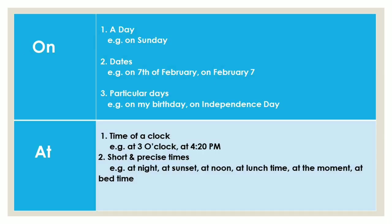The third preposition of time is 'at.' First, it is used for the time on a clock — for example, 'at 3 o'clock,' 'at 4:20 pm.' At 3 o'clock, we have a meeting; at 4:20 pm, the meeting will be over. Second, 'at' is used for short and precise times — such as 'at night,' 'at sunset,' 'at noon,' 'at lunch time,' 'at the moment,' 'at bedtime.' For example, at night we have planned to have a dinner, and at sunset the climate will be very beautiful to watch.